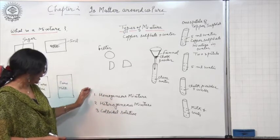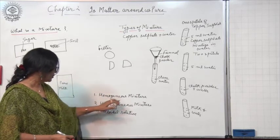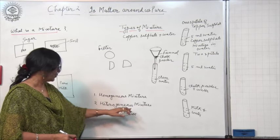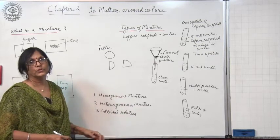Chalk powder in water forms a colloidal solution. The particles are not uniformly distributed and will not settle down; the particles are quite small in size. You cannot see milk particles suspended in water with the naked eye, but with the help of a microscope you can see the particles. So there are three types of mixtures: homogeneous mixtures, heterogeneous mixtures, and colloidal solutions.